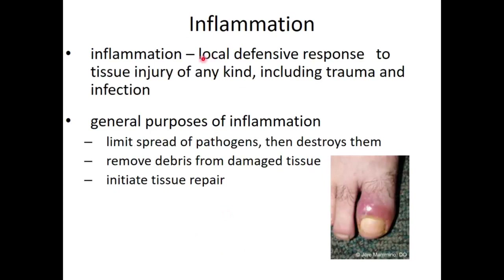Inflammation is a local response to tissue injury — whether trauma or infection. Looking at this image of an infected toe, you could see that same redness and swelling from stubbing a toe. The general purpose of inflammation is to promote blood flow to the area, prevent the spread of pathogens, dilute and destroy pathogens, remove debris from damaged tissue, and initiate tissue repair. Acute inflammation that does its job and resolves is a very good thing; chronic inflammation lasting months to years is a problem.